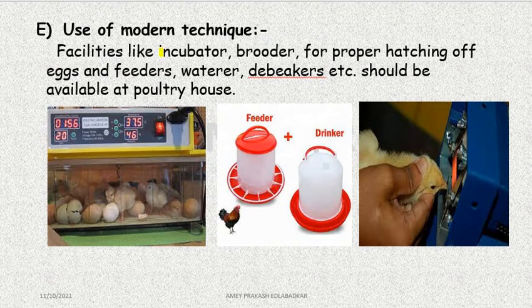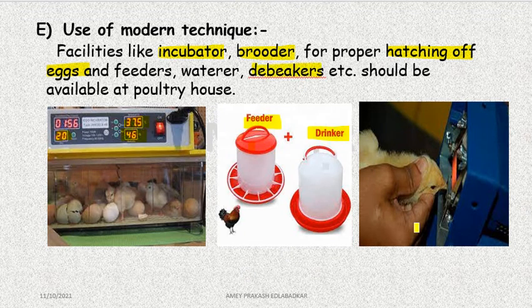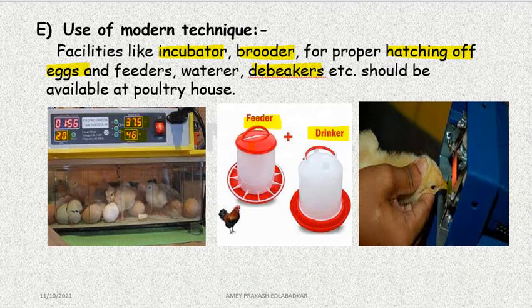Modern techniques are necessary - incubators should be kept, brooders should be kept, and for proper hatching of eggs, a hatchery is necessary. Feeders and drinkers should be available. In the hatchery, eggs are kept with temperature and duration maintained properly. Debeaking should also be done - young birds have very sharp beaks and they fight with each other causing injuries. A debeaking machine is used to trim their beaks to reduce injuries and comparatively minimize losses.